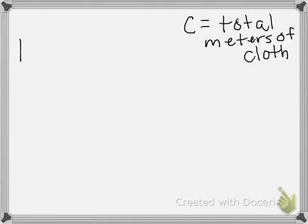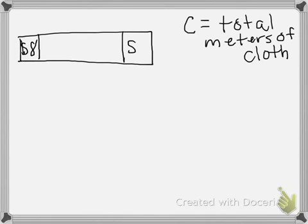We know that each meter costs $8. So we will represent our first section and last section of the tape diagram. Because we are not sure how many meters she bought total. But we know she has $56 worth of cloth.